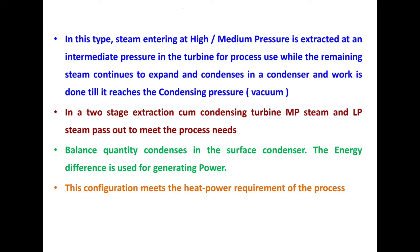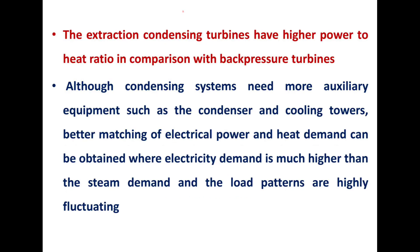In a two-stage extraction condensing turbine, steam enters at high or medium pressure and is extracted at an intermediate pressure for process use, while the remaining steam continues to expand and condenses in a condenser until it reaches the condensing pressure vacuum. Medium pressure (MP) steam and lower pressure (LP) steam pass out to meet process needs, with the balance quantity condensed in a surface condenser. The extraction condensing turbine has a higher power-to-heat ratio compared to backpressure turbines, and although it needs more auxiliary equipment such as a condenser and cooling tower, it better matches electrical power and heat demand where electricity demand is much higher than steam demand and load patterns are highly fluctuating.